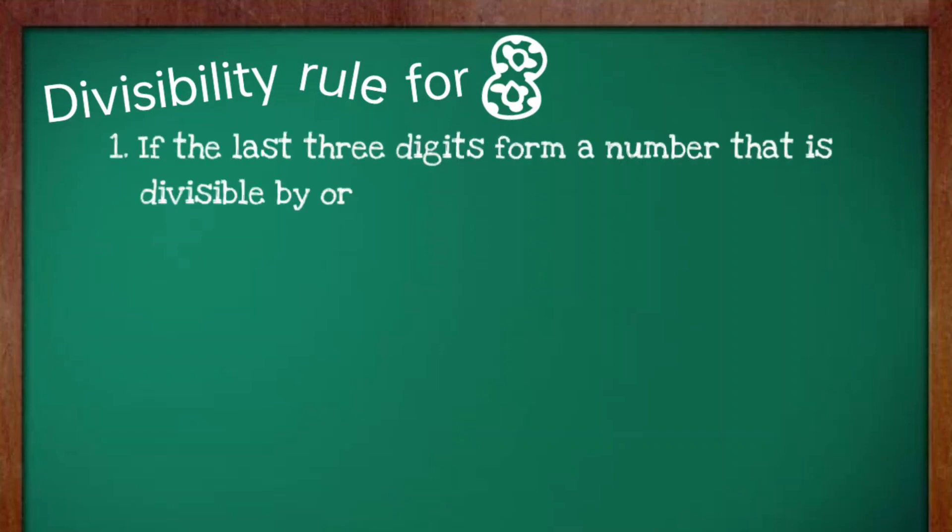Now, let's take a look at the divisibility rule for 8. First, if the last three digits forms a number that is divisible by or a multiple of 8. Also, if a number ends with three zeros.